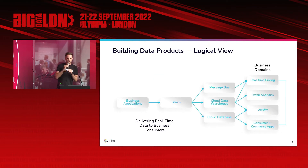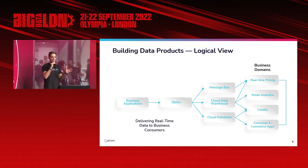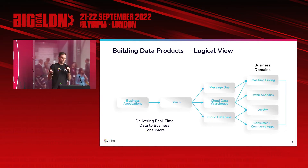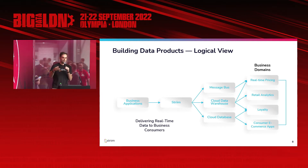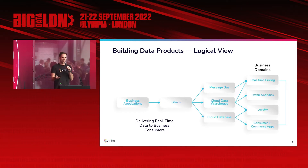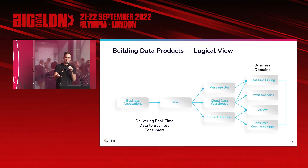Let's take a logical view of building data products. This ties into discussions around data mesh and data fabric. The logical view is taking data off your business and operational applications, loading them through a streaming system, and then when they go into a cloud data warehouse, a cloud database, or a message bus like Kafka or AWS Kinesis, you're feeding this data into business domains — thinking about your data in the context of the domains that are consuming it.